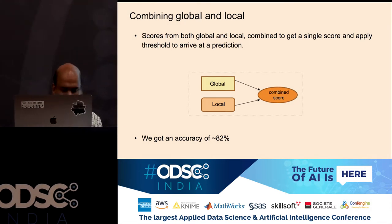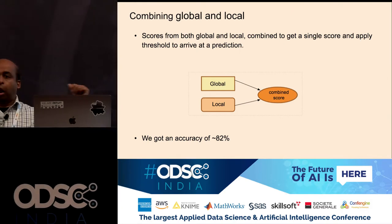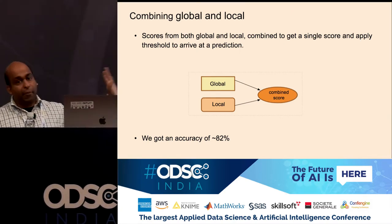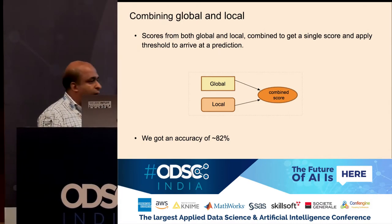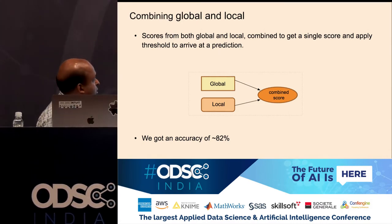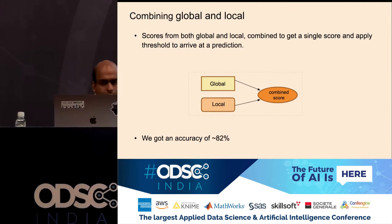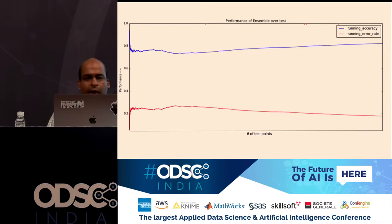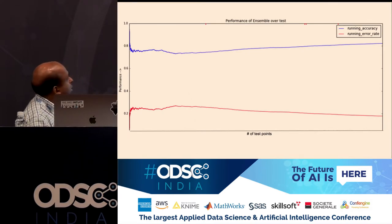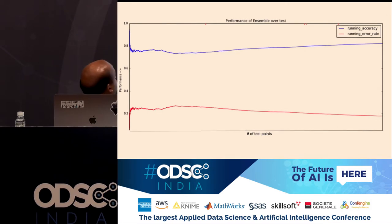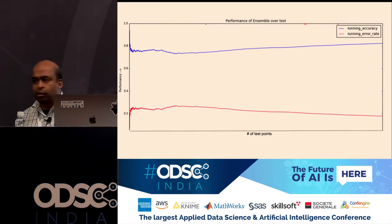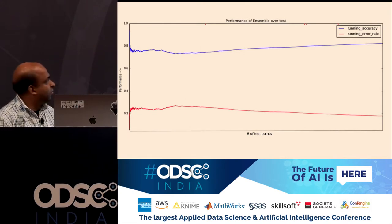Coming back to our original setting with global and local: we took a score from both models and combined them at runtime. This ensemble gave us improving accuracy over time, starting from the 0.75 baseline and going up. The red line is just the mirror error rate.